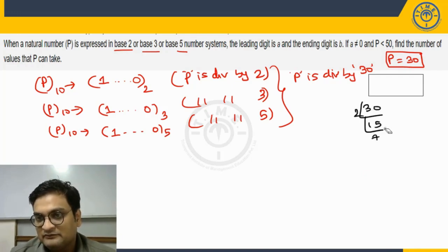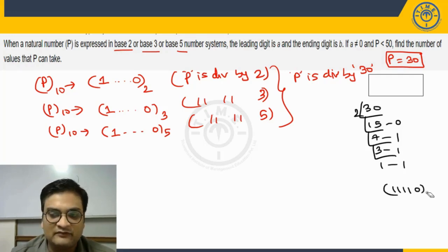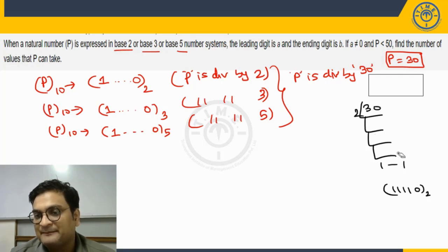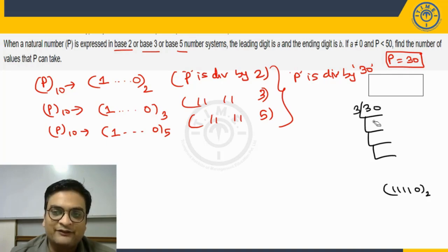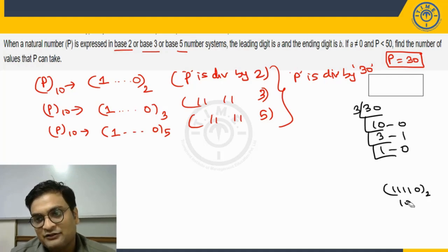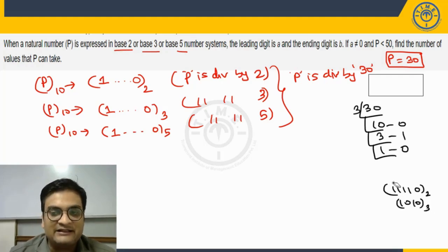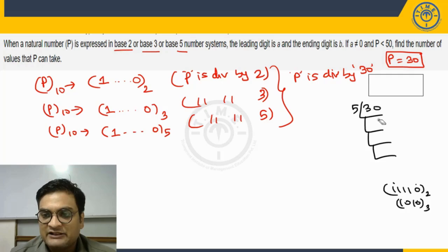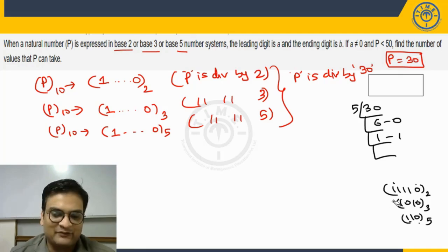If you take P as 30, what is the binary equivalent? 2 goes 15 times, 0. 2 goes 7 times, 1. 2 goes 3 times, 1. 2 goes 1 time, 1. So it is 1,1,1,1,1,0. What is 30 in base 3? It will go 10 times, 0. 3 goes 3 times, 1. 1 time, 0. So 1,0,1,0 in base 3. The leading digit and the ending digit are same. Similarly, when you convert 30 into base 5, 6 times 0, 1 times 1, so 1,1,0. Again, you can see the leading digit and the ending digit are same. So one value is P equal to 30.